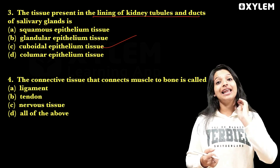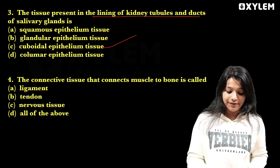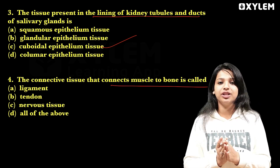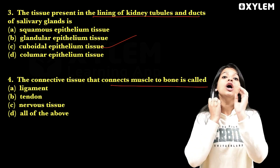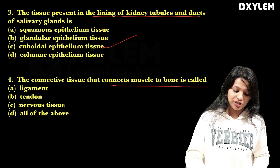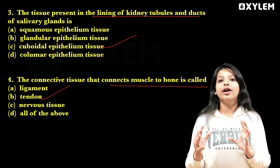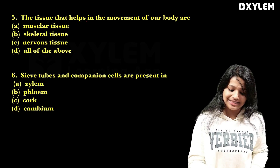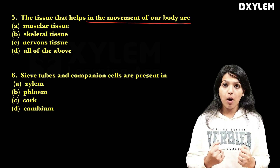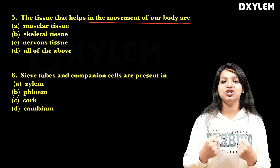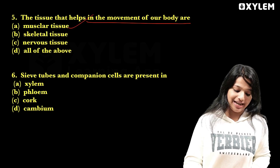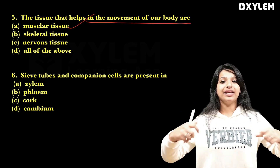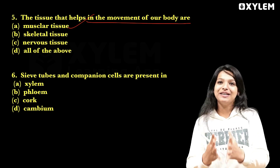Cuboidal epithelium lines the kidney tubules. Muscle to bone is a tendon. The tissue that helps in the movement of our body — we find actual muscle to see our body movements, so it is muscular tissue.